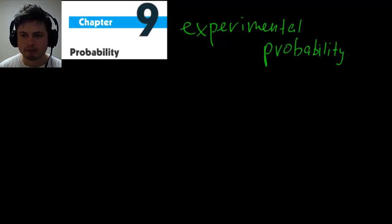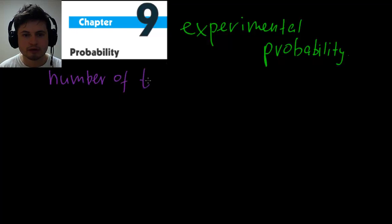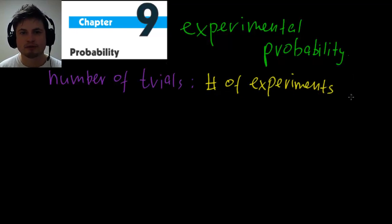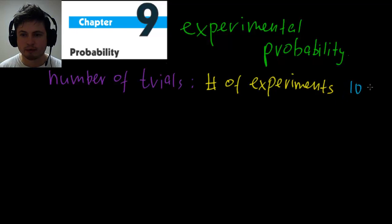In experimental probability you need to know certain terms. The first is 'number of trials,' which is the number of times you repeat the experiment. Going back to the die example, it's how many times you throw it — let's say 10 throws, so that's our number of trials.